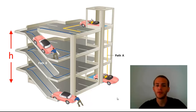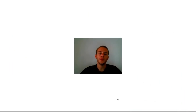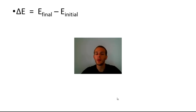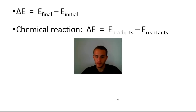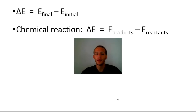Doing calculations with state functions is very easy because if you want to calculate the change in internal energy, or the change in any state function, it's simply the difference between the final and initial states. For internal energy: ΔE equals final internal energy minus initial internal energy. In the event of a chemical reaction, the final state is the products and the initial state is the reactants, so ΔE equals the internal energy of the products minus the internal energy of the reactants.